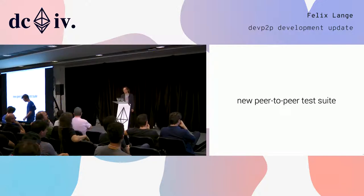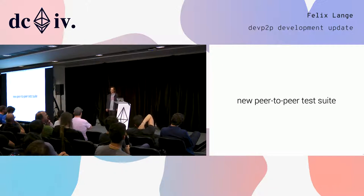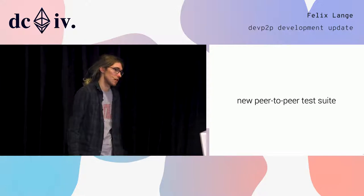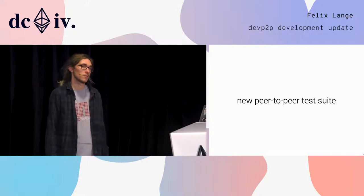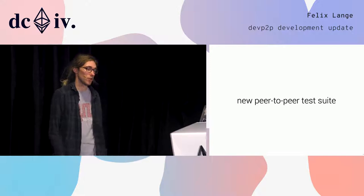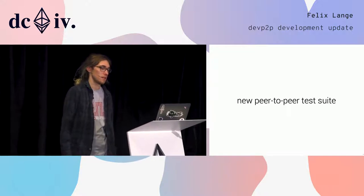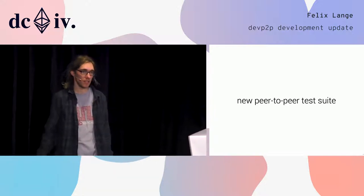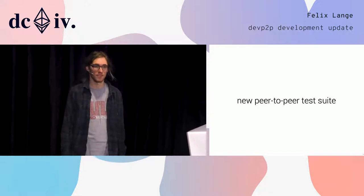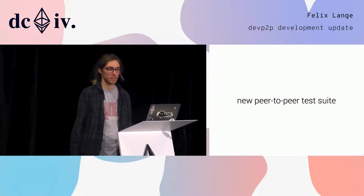We also have a test suite now, which I'm very excited about. Frank has joined the GoEthereum team recently and created a peer-to-peer networking test suite based on the Hive tool. Hive is a tool we use for testing consensus between clients and also for testing the RPC interface. Now we can test the peer-to-peer networking as well. Geth, Parity, Aleth, and EthereumJ are hooked up to this test suite, and Trinity is being added — it will eventually be there too.